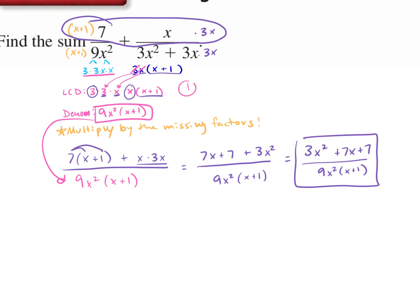To summarize the steps: step 1 is find the least common denominator (same as least common multiple). Step 2 is multiply by the missing factors. Step 3 is add the numerators together.